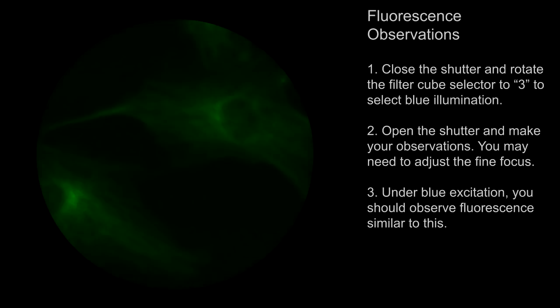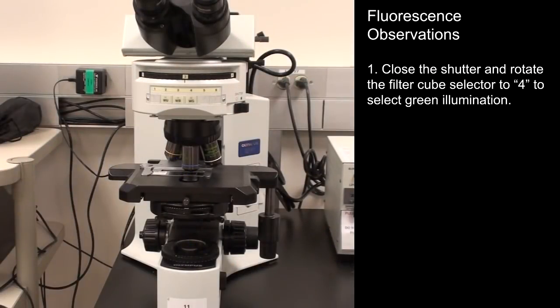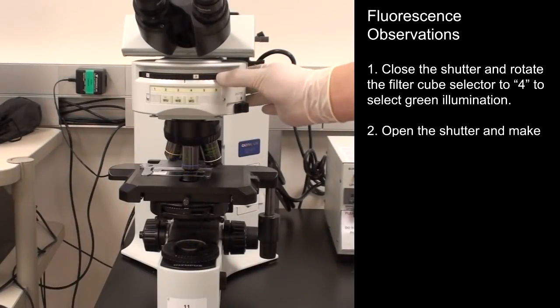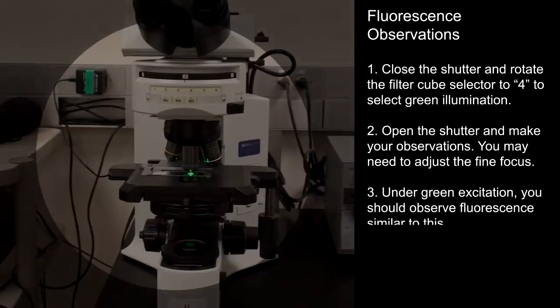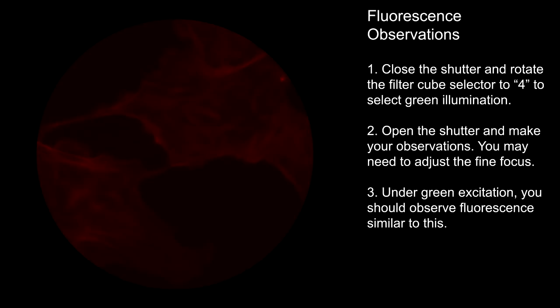Close the shutter and rotate the filter cube selector to 4 to select green illumination. Open the shutter and make your observations. You may need to adjust the fine focus. Under green excitation, you should observe fluorescence similar to this.